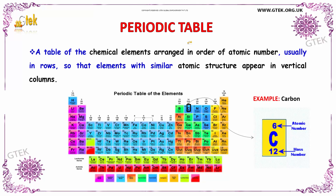Let us discuss the concept of the periodic table. The periodic table is a table of chemical elements arranged in order of atomic number.